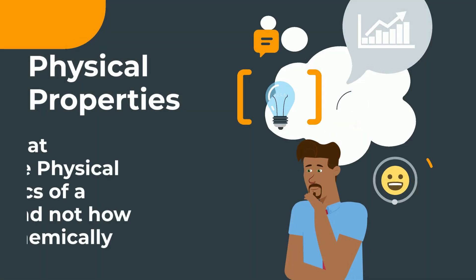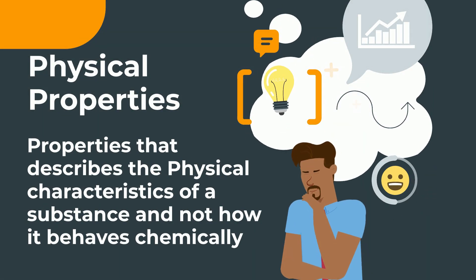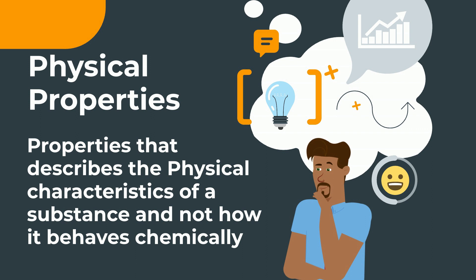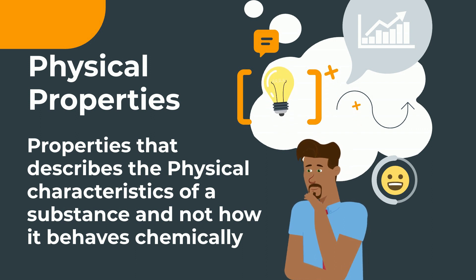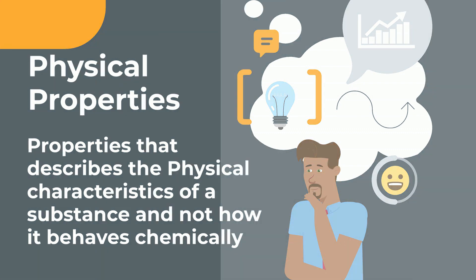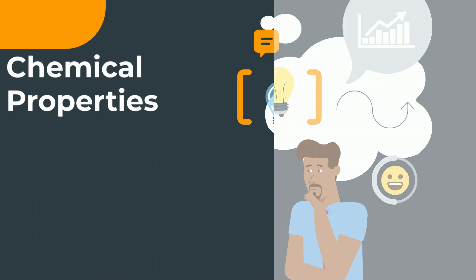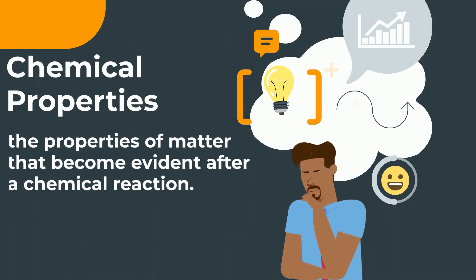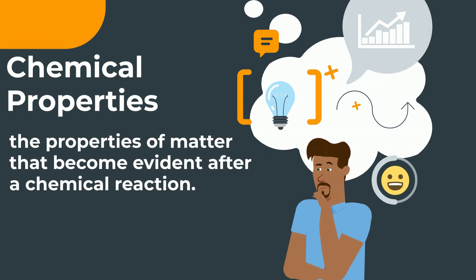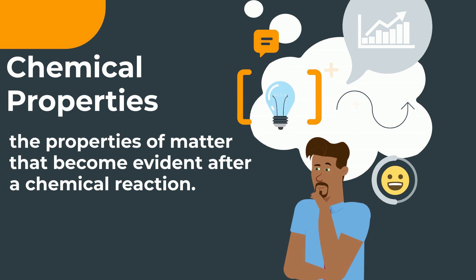Physical properties are properties that describe the physical characteristics of a substance and not how the substance behaves chemically. A chemical property, on the other hand, are properties of matter that become evident after a chemical reaction.